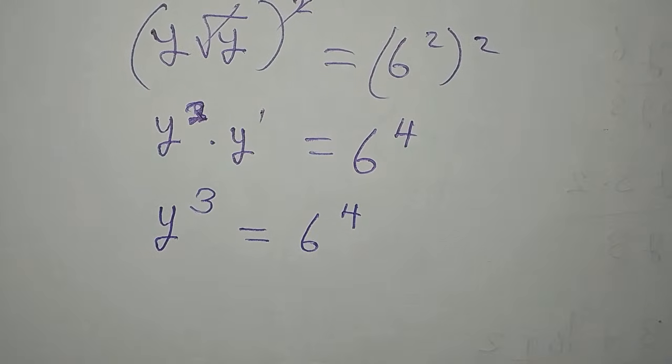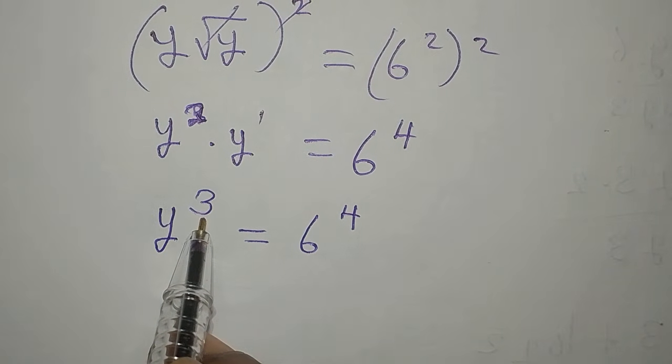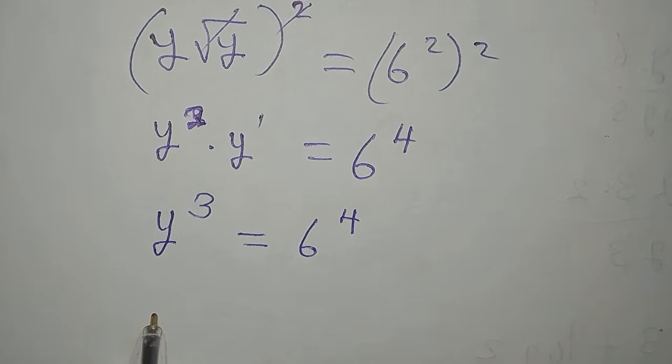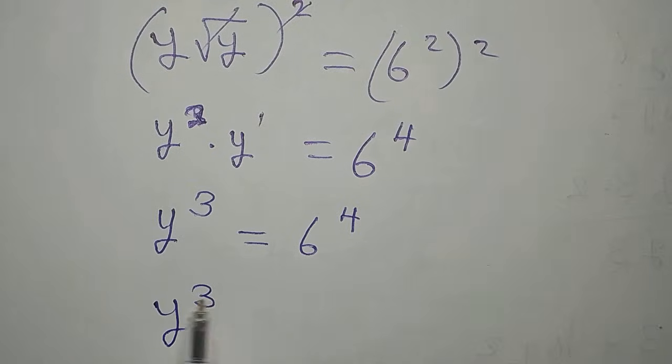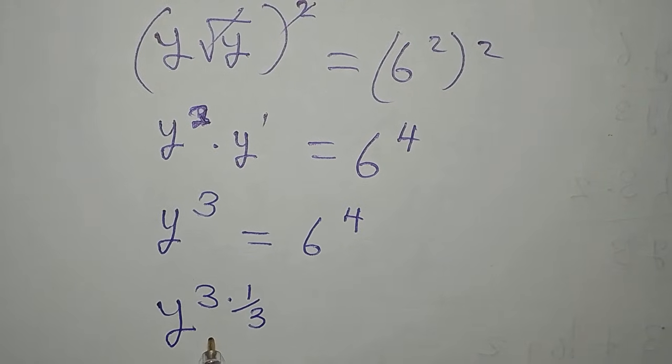Then, if I continue from here, I am trying to move the power of y to the other side. So it will be y to the power of 3 multiplied by 1 over 3, so that it can cancel itself from here.